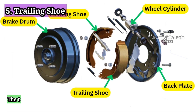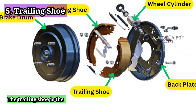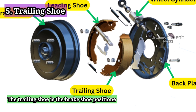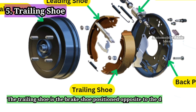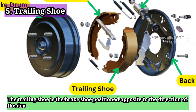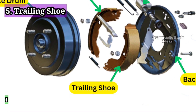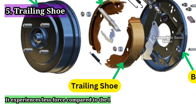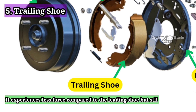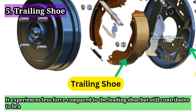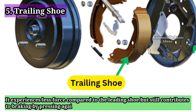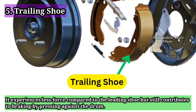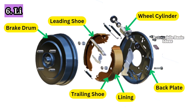5. Trailing shoe. The trailing shoe is the brake shoe positioned opposite to the direction of the drum's rotation. It experiences less force compared to the leading shoe, but still contributes to braking by pressing against the drum.